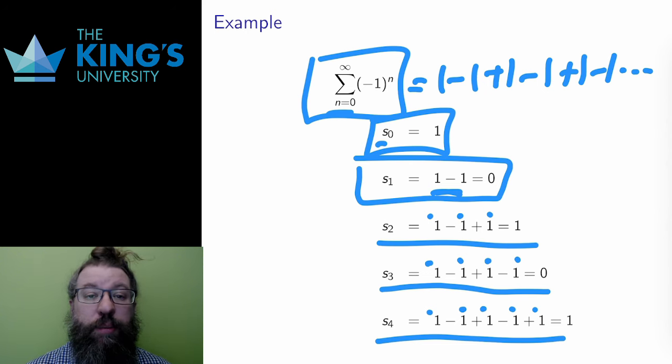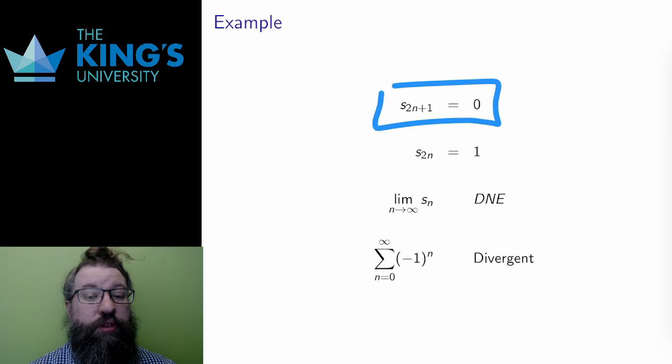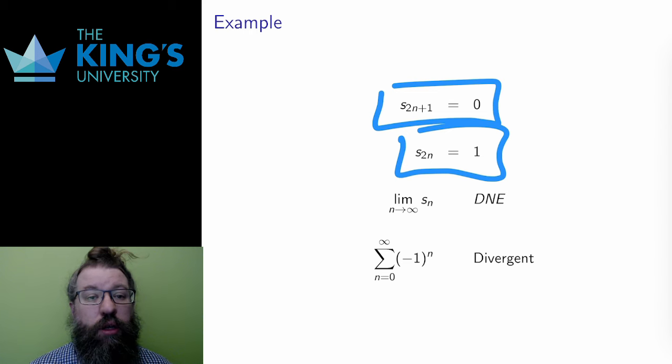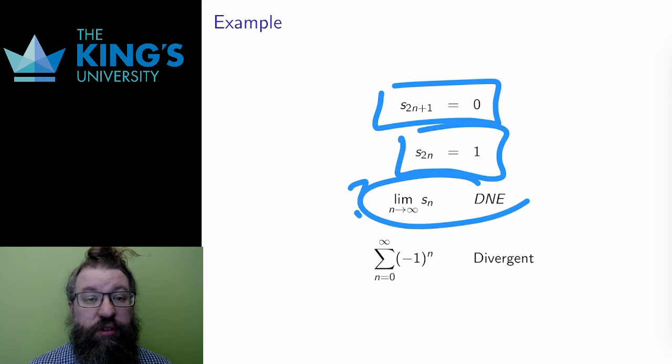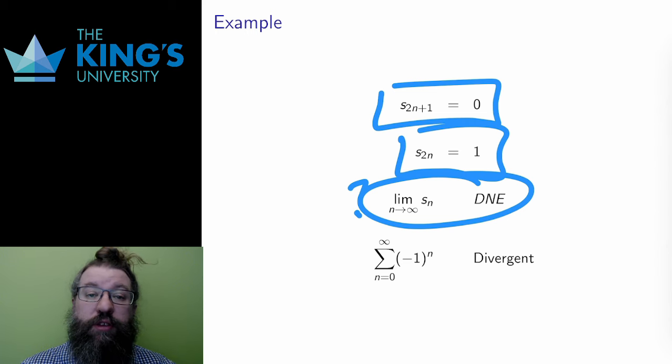In this way, I see a pattern. The odd partial sums are all going to be 0, and the even partial sums are all going to be 1. If I ask for a limit, this cannot work. I alternate between 0 and 1. Such behavior cannot approach any one number. Therefore, this limit does not exist, and the infinite series is divergent.